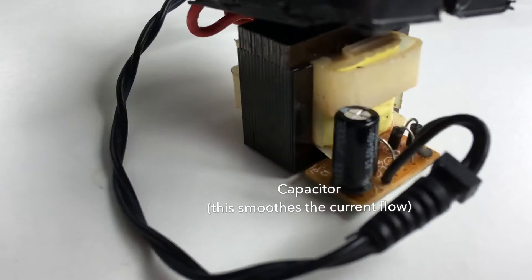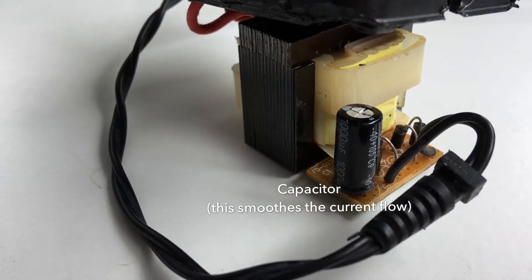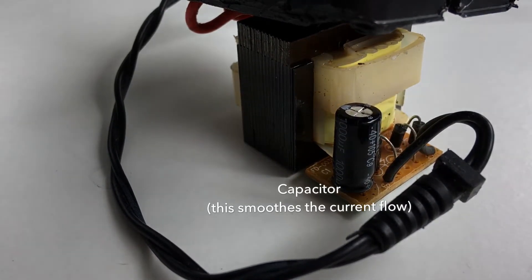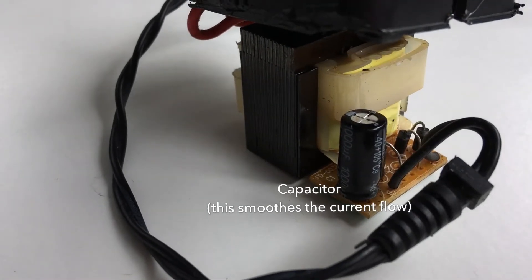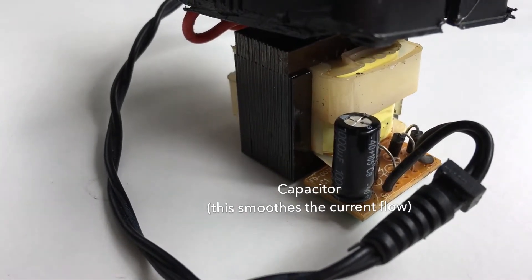Next, the current is smoothened out before sending it out to the output wires because most devices really need a stable and constant current in order to work well.